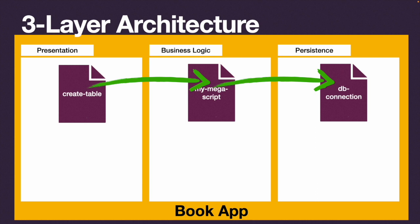This is a great way to start separating your concerns. You can tell a front-end developer to only concern themselves with the presentation layer code, a database developer with the persistence layer, and a back-end developer with the business logic layer. But this is a very loose architecture - it just sets up guidelines. It doesn't really define how the presentation layer talks to business logic, or whether there's one file in each layer responsible for inter-layer communication.